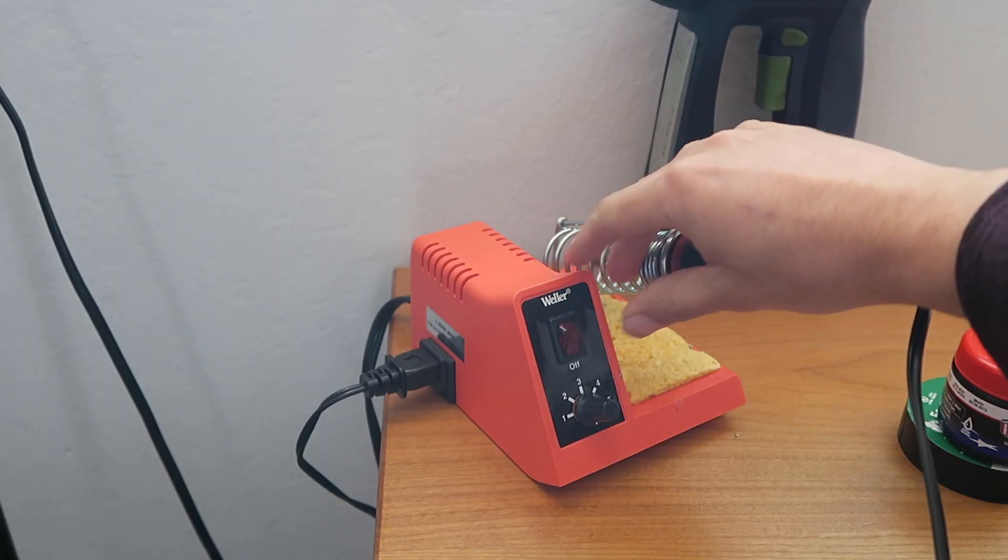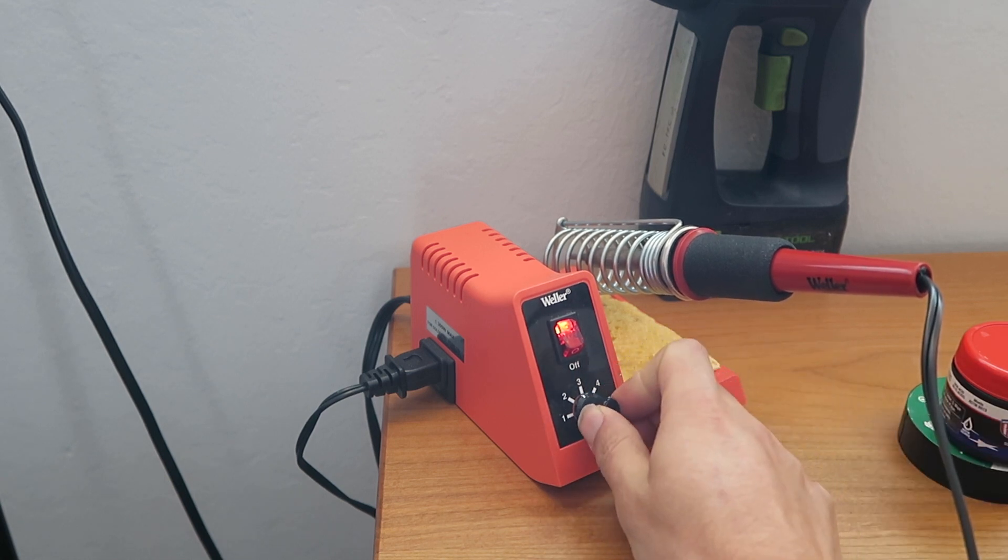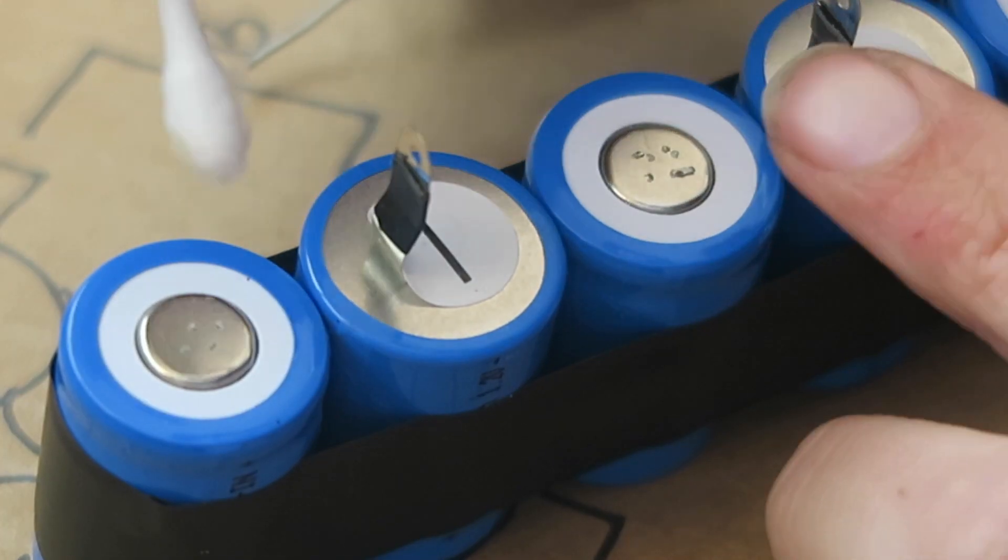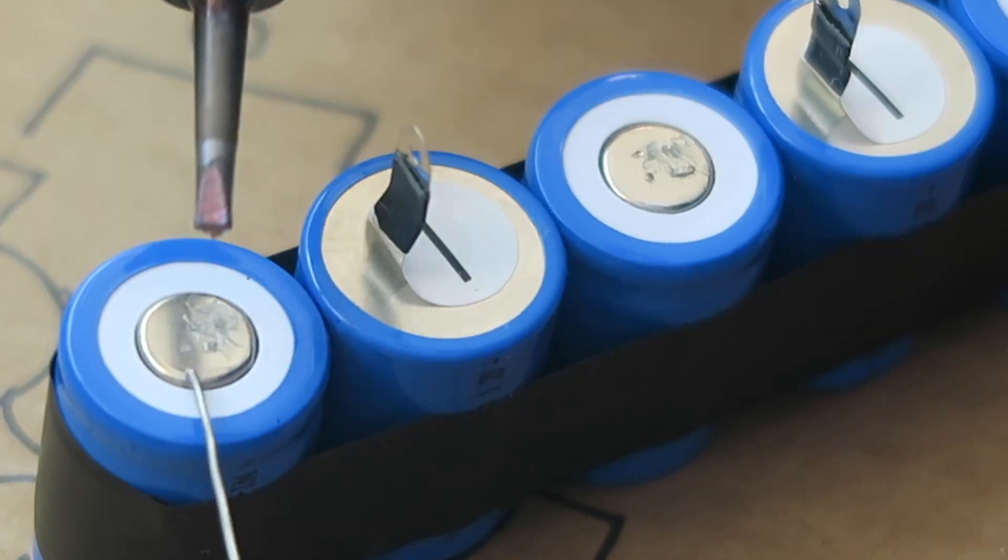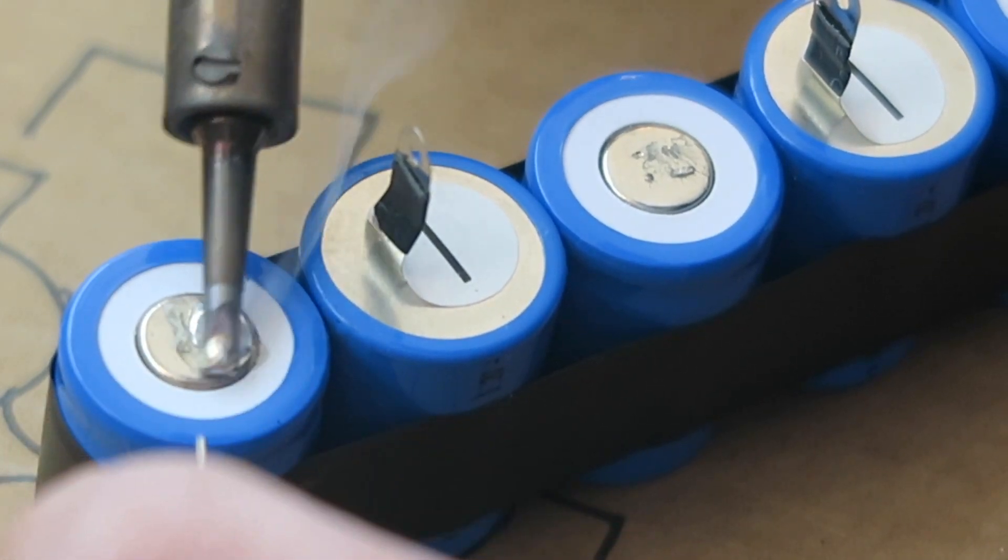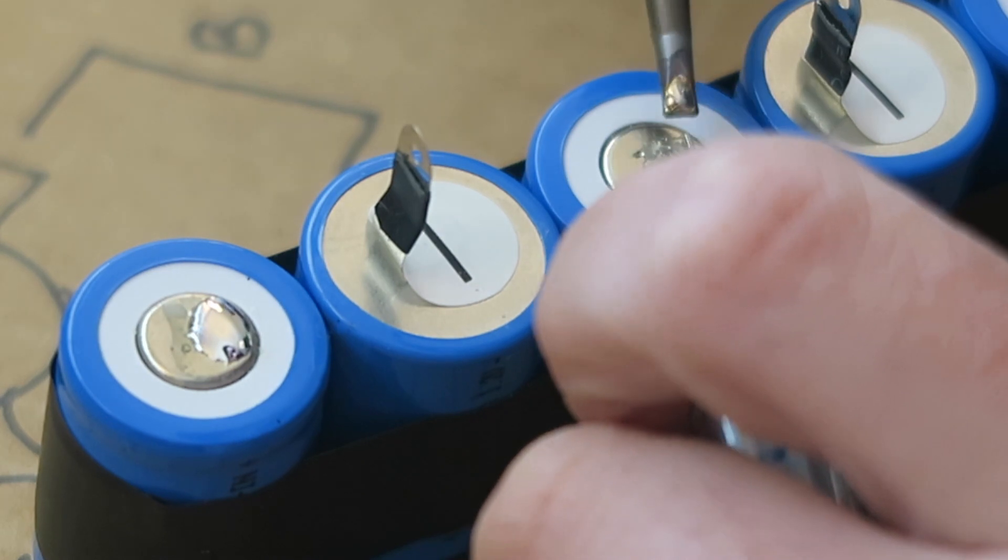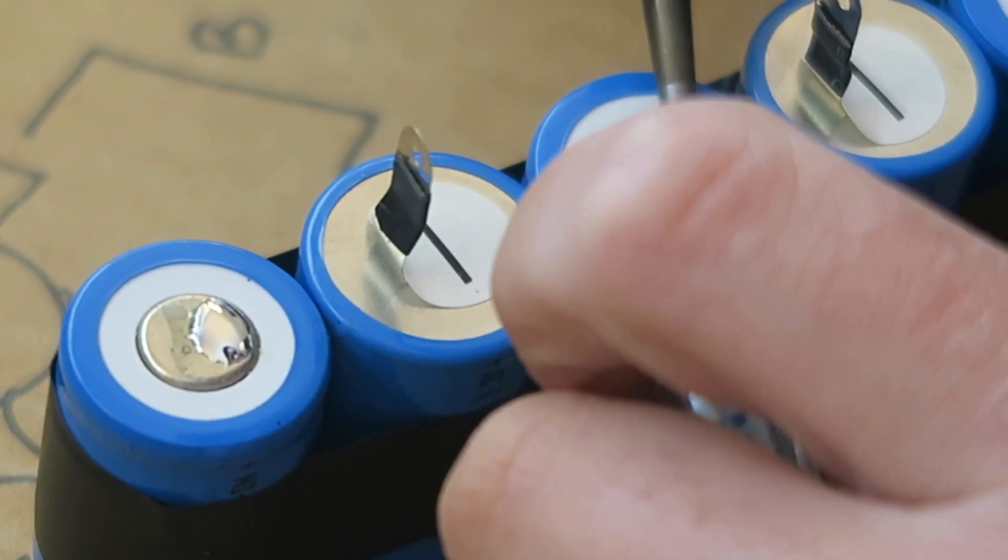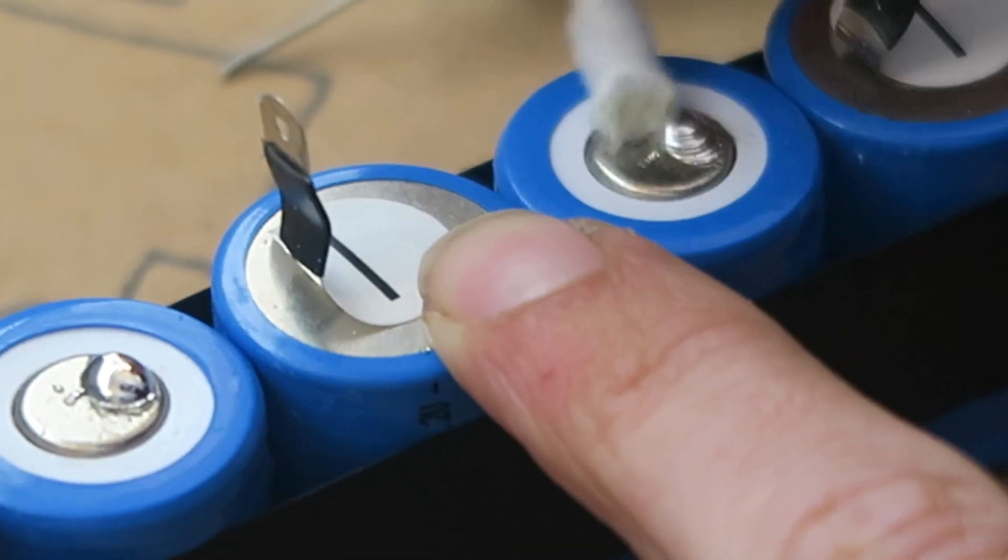You're then going to go ahead and turn on your soldering iron. And I used the number four setting on mine. And then, you're going to go ahead and dab just a little bit of flux on the battery terminals that you're going to solder to. Then, go ahead and add some solder. Spread it out nice and thin. Repeat on the second cell. And then, once you're happy with the solder, you're going to go ahead and clean it off a little bit with a Q-tip.